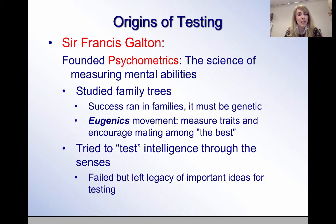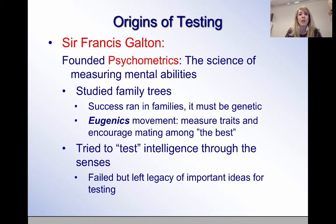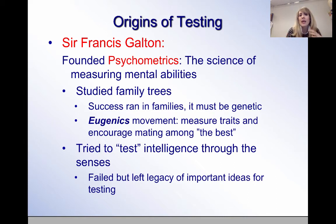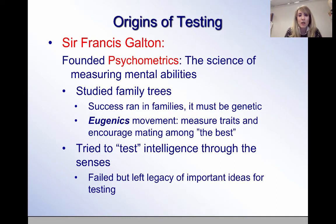Galton jumped to the conclusion that success meant intelligence, and that intelligence was hereditary — passed down from generation to generation. He wanted to figure out how to give someone an IQ score. Although there was no clear method yet, he thought you could test intelligence through the senses, like recognizing high-pitched sounds or measuring vision. Ultimately that was not a good way to test intelligence, but the idea that one could test mental abilities started with Galton.